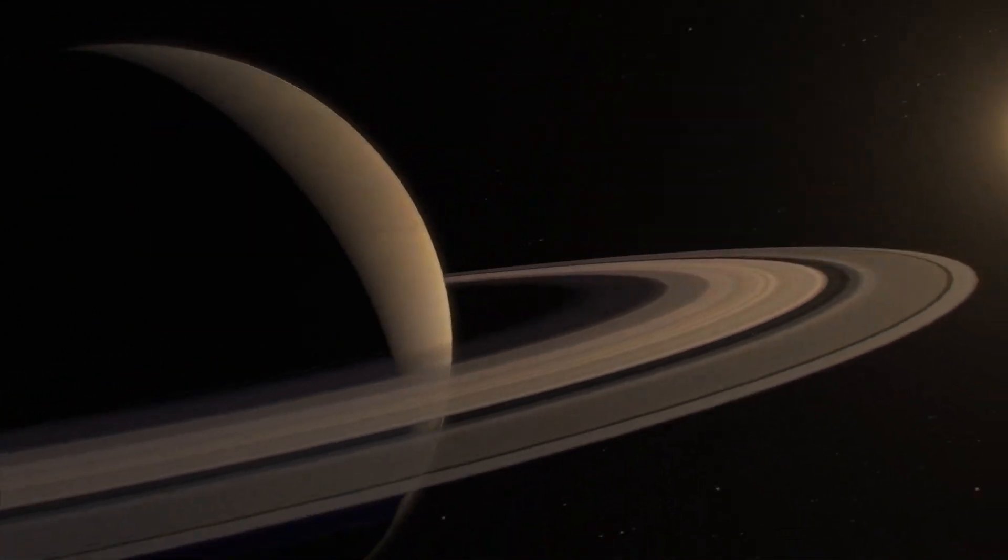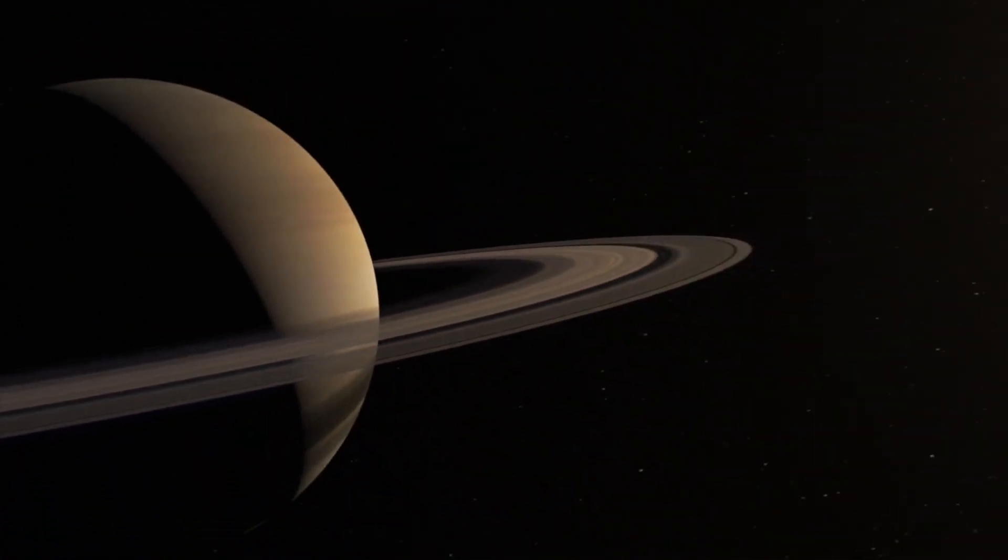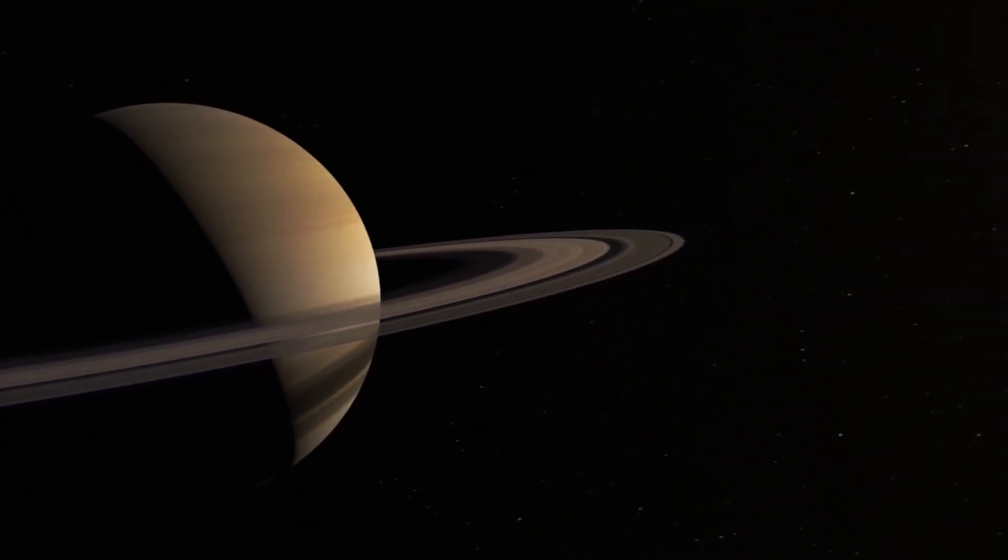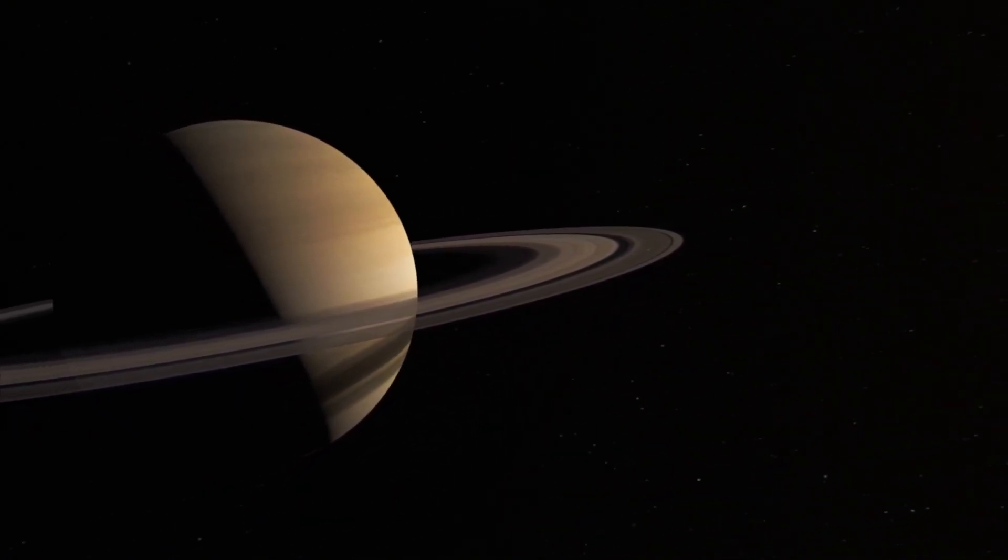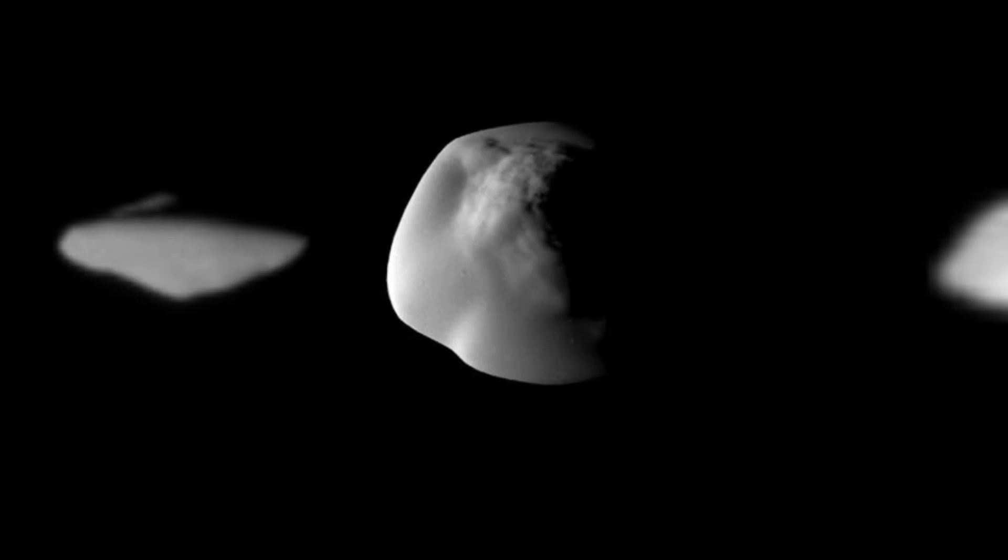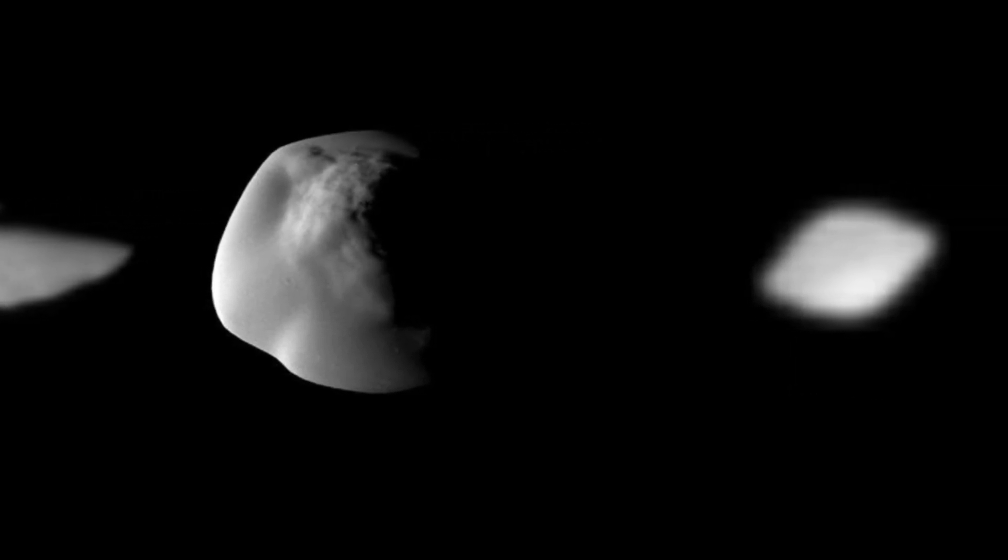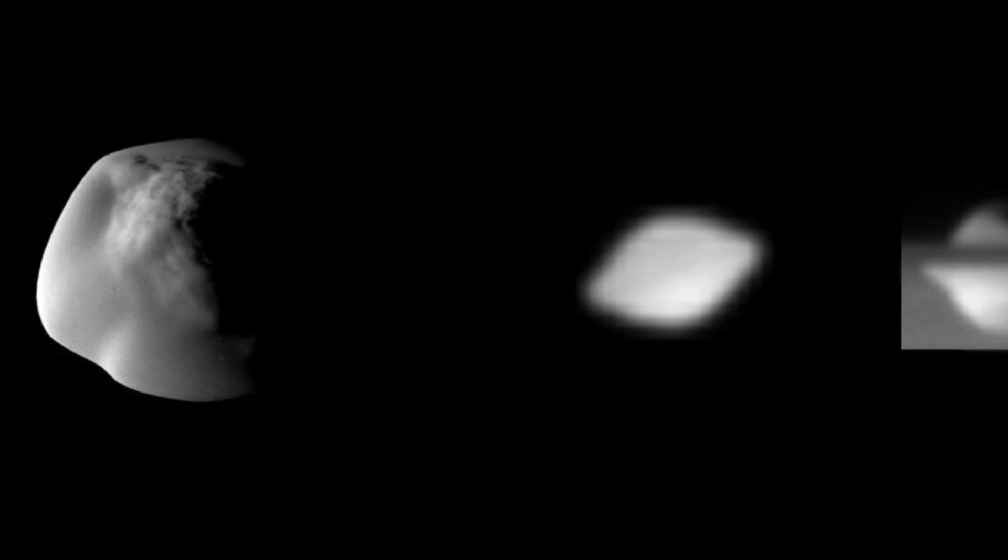In November 1980, Voyager 1 reached Saturn. Here it captured images of the planet's rings, revealing their complex structure in unprecedented detail. The spacecraft discovered new moons and provided insights into the dynamic nature of planetary systems.